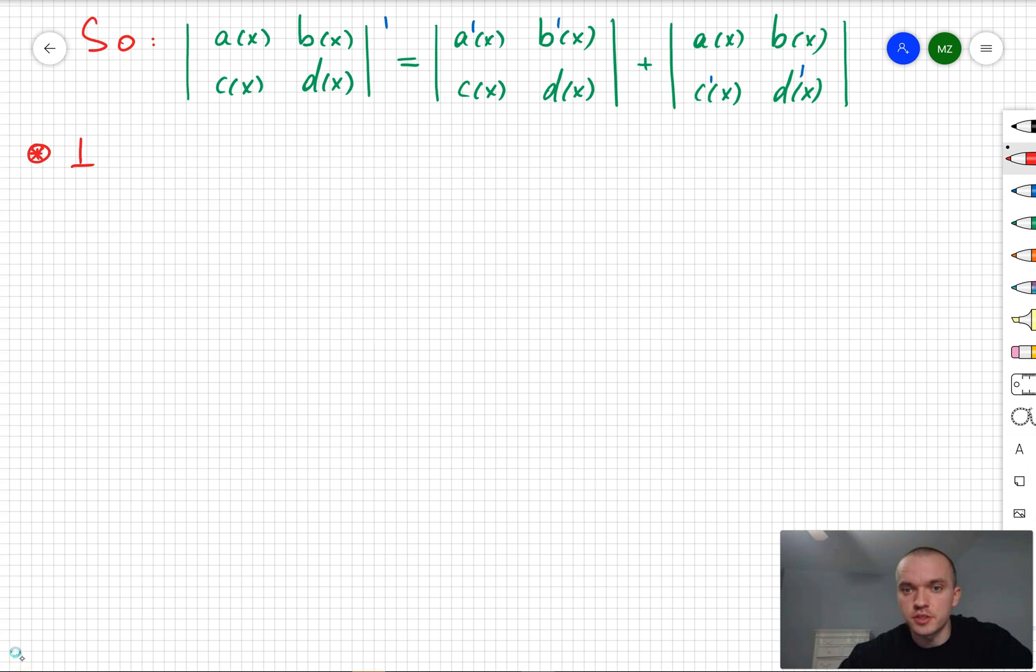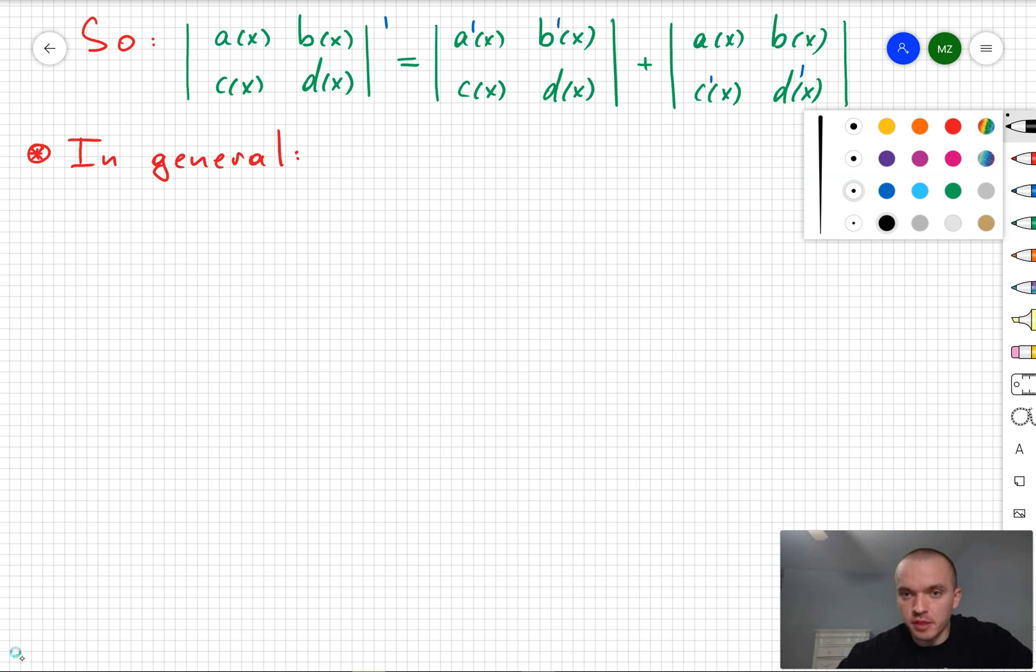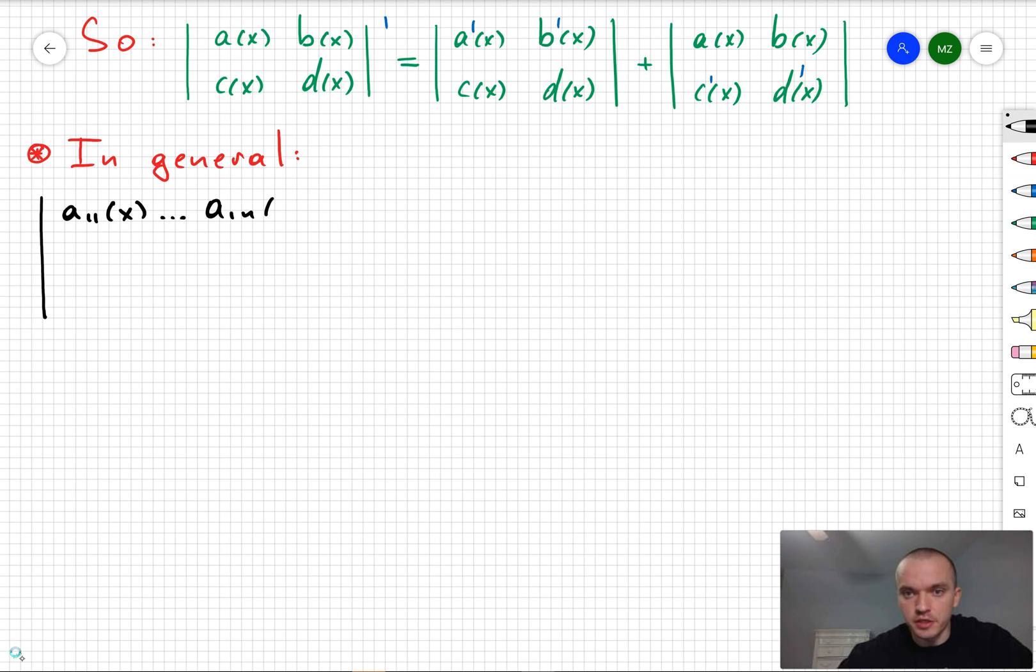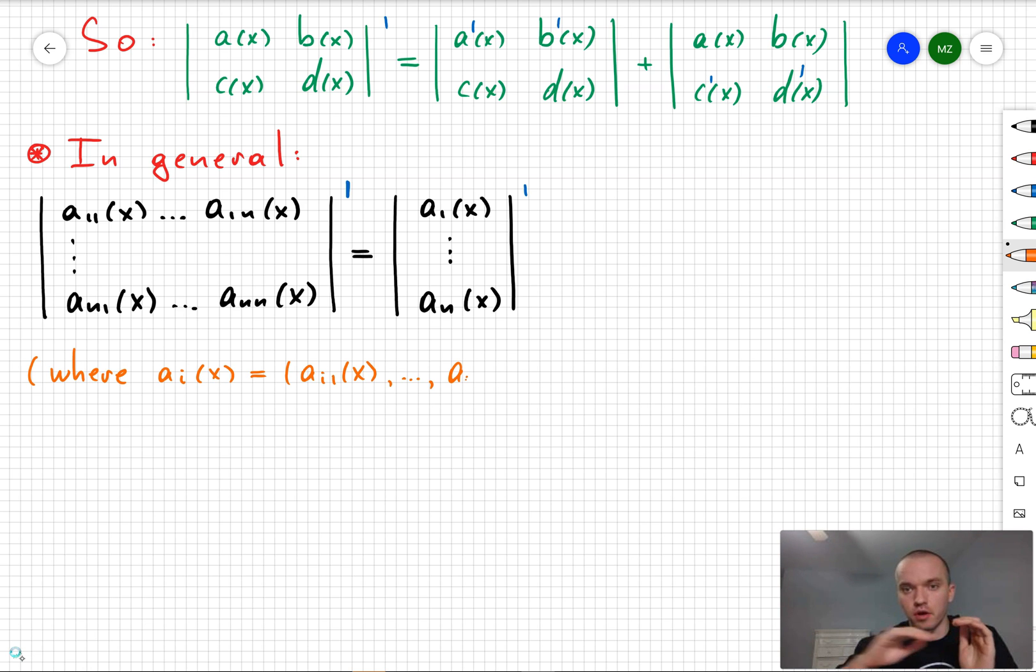And right now let's generalize a 2 by 2 matrix up to n by n matrix. So we have an n by n matrix with entries A i j, but I'm going to write this matrix as a column of A i of x where A i of x is going to be just the row of A i 1 of x up to A i n of x.